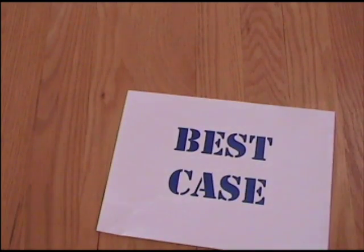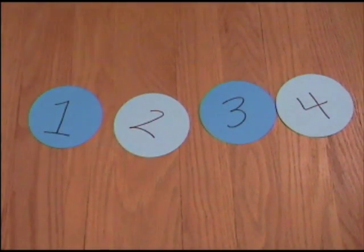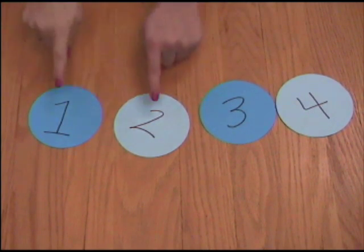Best case! Best case is order n, which means that it will only have to run through the list once, checking to make sure that the list is in order.